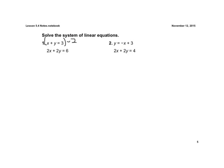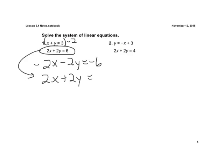Distribute to everything. So if we rewrite that top equation, we now have a negative 2x minus 2y equals a negative 6. Let's go ahead and rewrite this equation. Let's bring it down. 2x plus 2y equals 6.